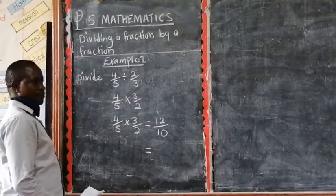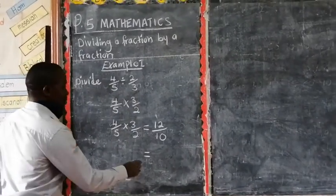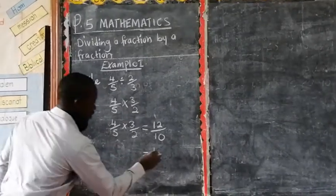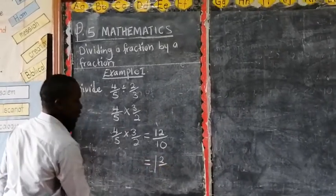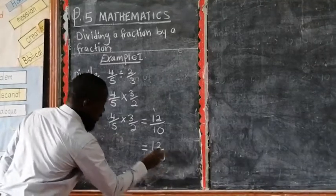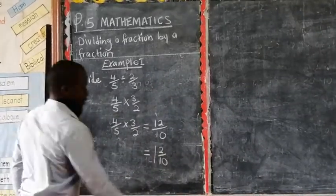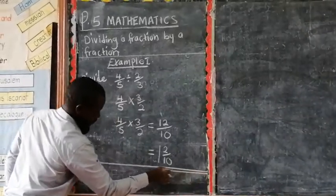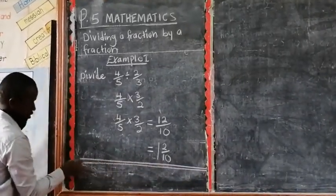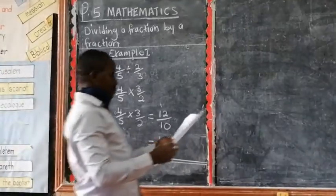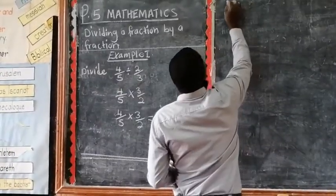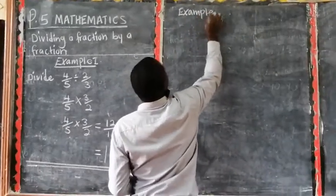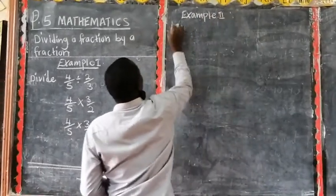There is a remainder. And the answer is one with a remainder. The remainder is 2. So it is 2 out of 10. Then the denominator is the dividing line.